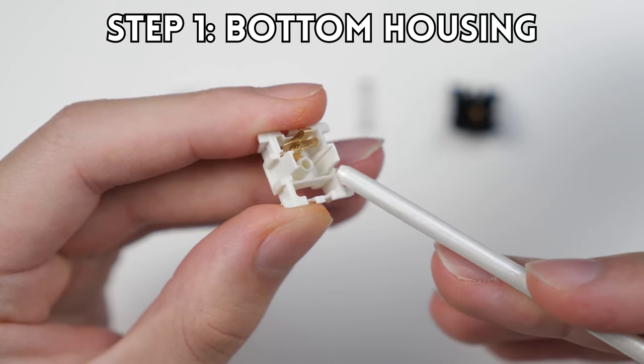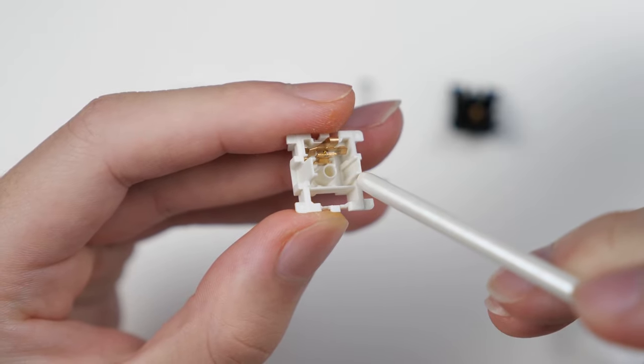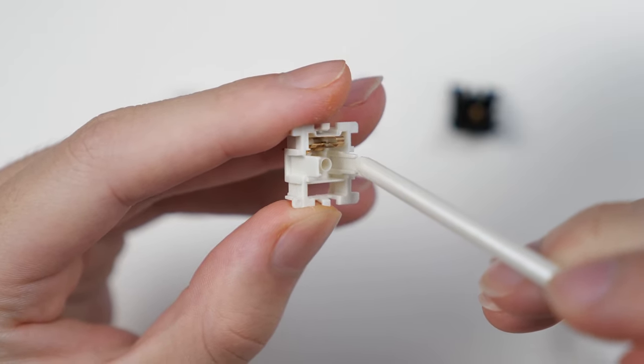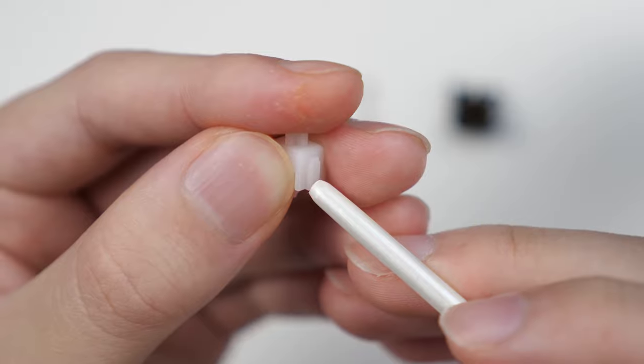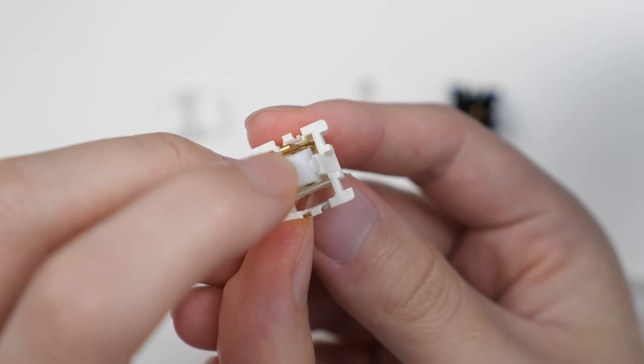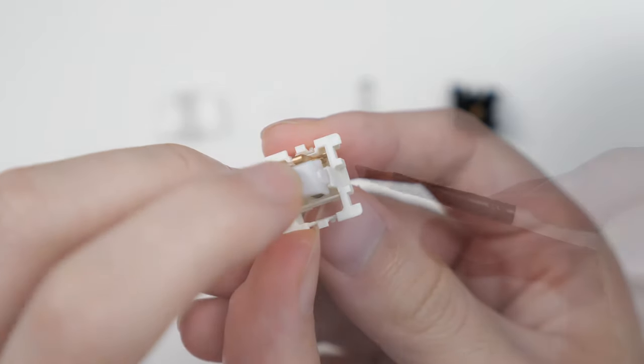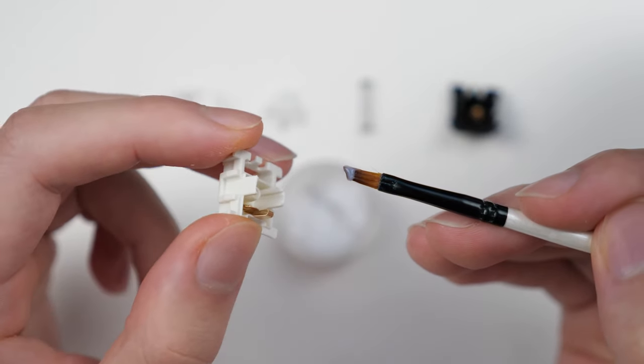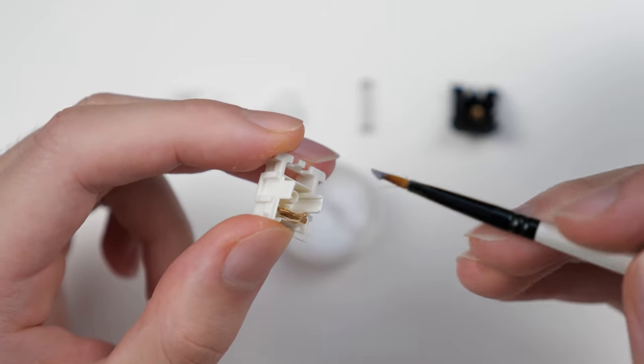Starting with the bottom housing, we have the center column and rails. These rails are what guides the stem to go up and down. These protruding bumps on the stem are what goes onto these rails and is going to be the main point of contact and which is why we have to lube them carefully. Start off with a small amount of lube and try to cover the rails with a single stroke to lay a nice foundation.